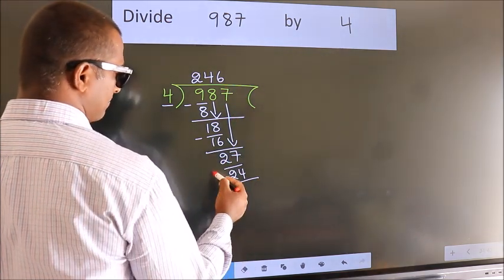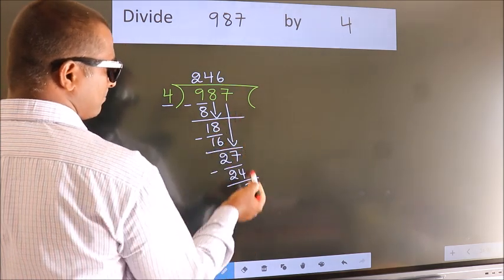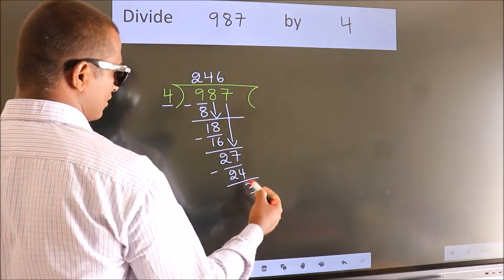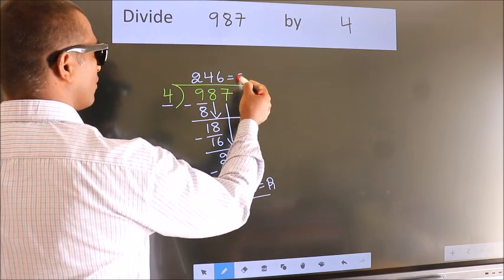Now we subtract. We get 3. No more numbers to bring down, so we stop here. This is our remainder. This is our quotient.